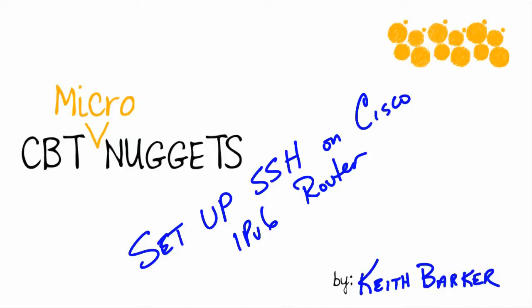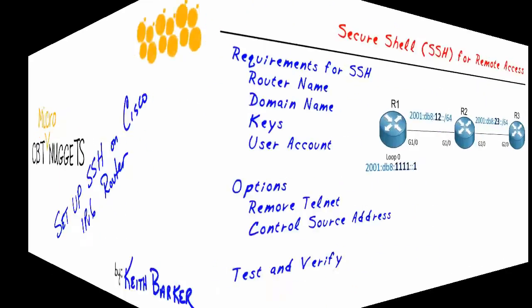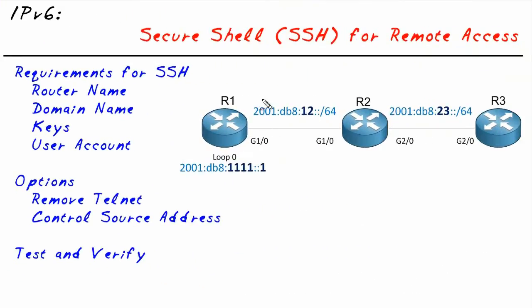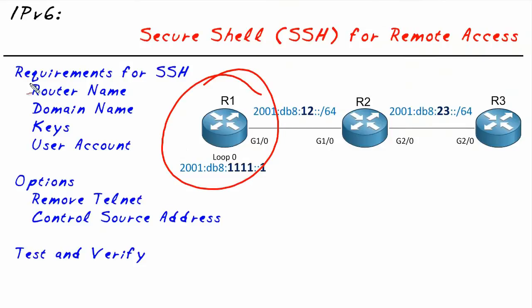Setting up Secure Shell on a Cisco IPv6 router. Let's imagine that you and I have been put in charge of this router and we've been tasked with setting up SSH for it. There's great news regarding IPv6 and SSH: all the steps for the basic configuration are identical to IPv4. This includes specifying a router name and a domain name, because those are required for generating the keys used by SSH, and we're also going to create a user account.